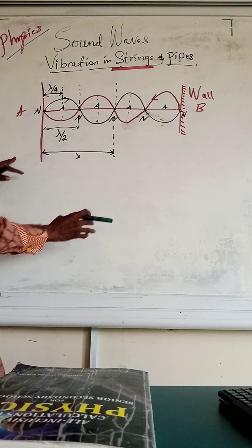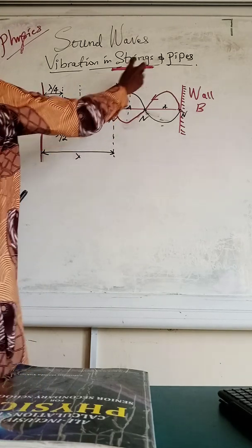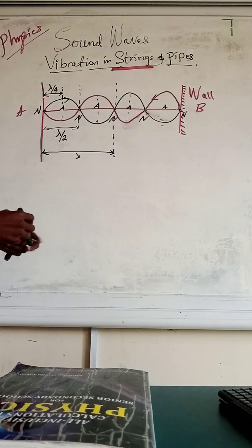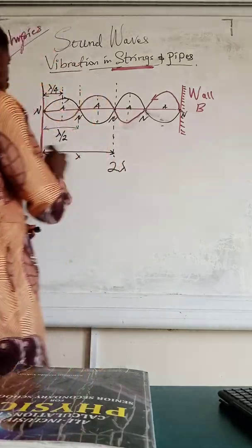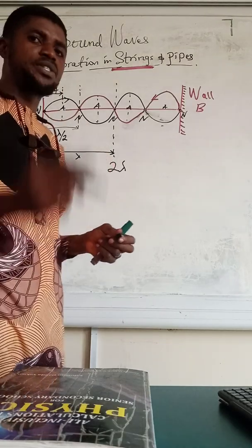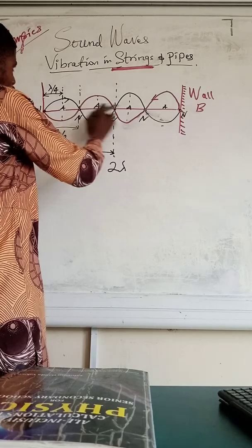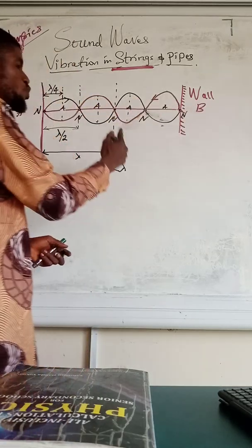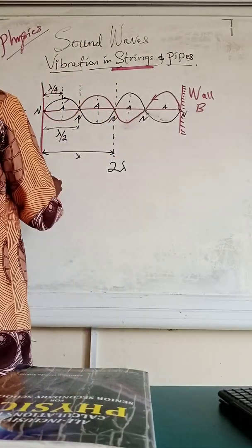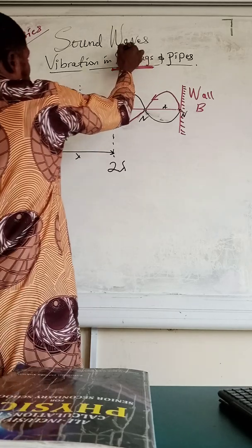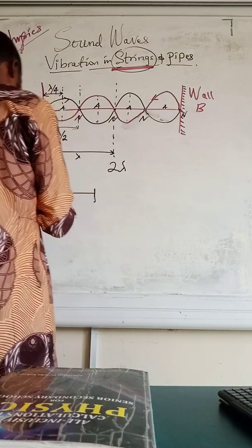Everything I'm doing right now is a replica of what you have here. Remember I was talking about loops — this is one, two, three, four, so this is four loops. What we have here in full is just two wavelengths. One full wavelength is one complete circle. So we have two oscillations here, which equal two wavelengths.